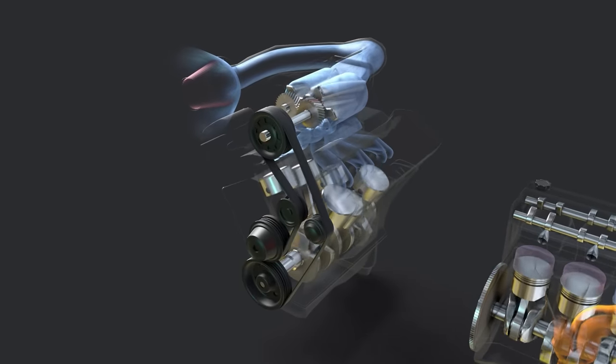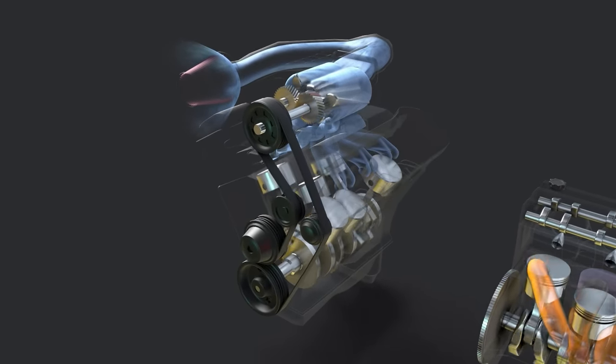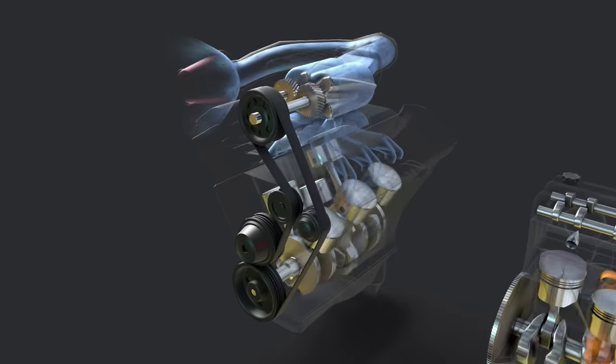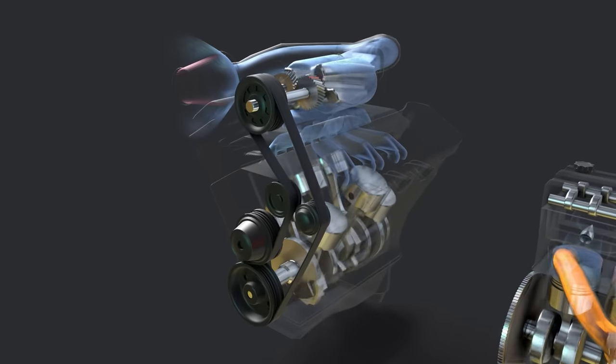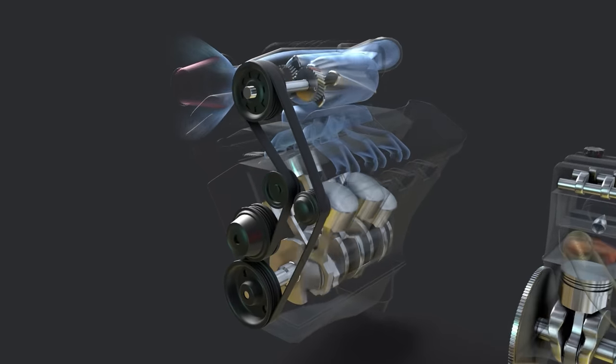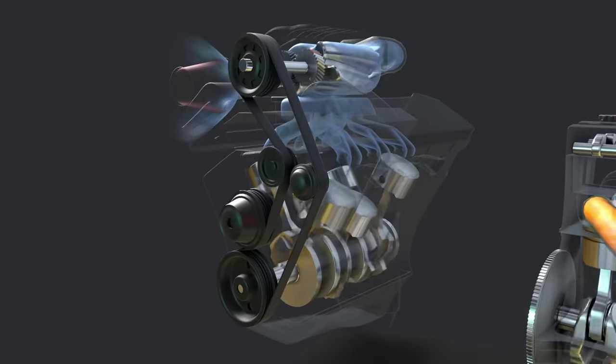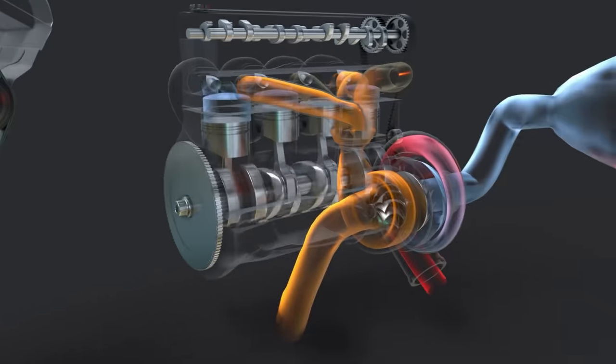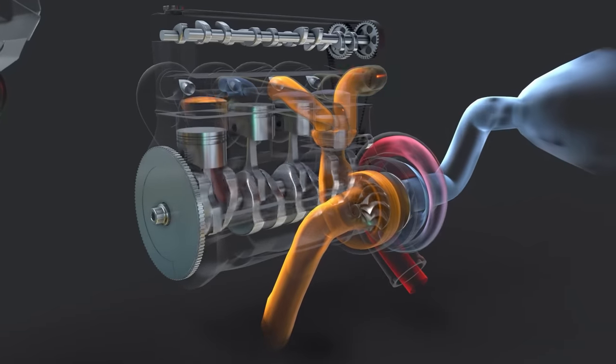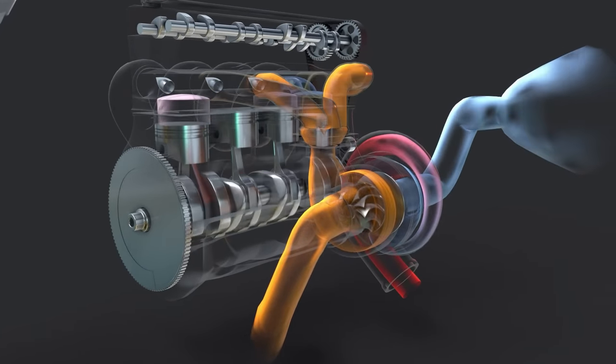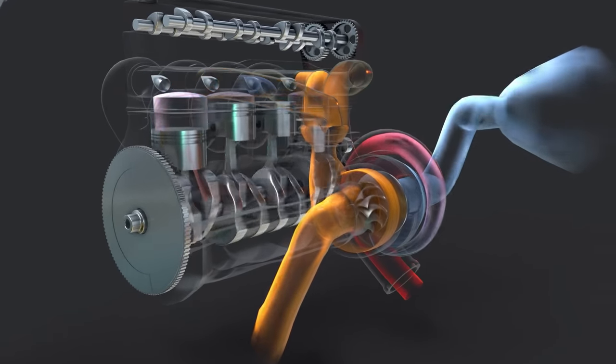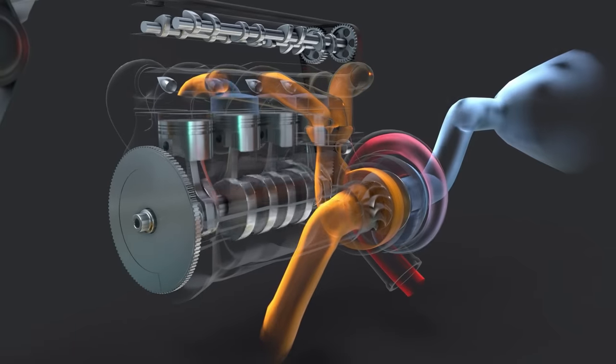Superchargers take power to make power, and an average setup can require 40-60 hp to function. This doesn't mean that overall engine efficiency is always sacrificed, as some setups can increase fuel economy when not driven aggressively. Though turbos do increase back pressure on the engine, they derive power primarily from otherwise wasted exhaust heat, as opposed to exhaust flow pressure. As such, they can be very efficient.